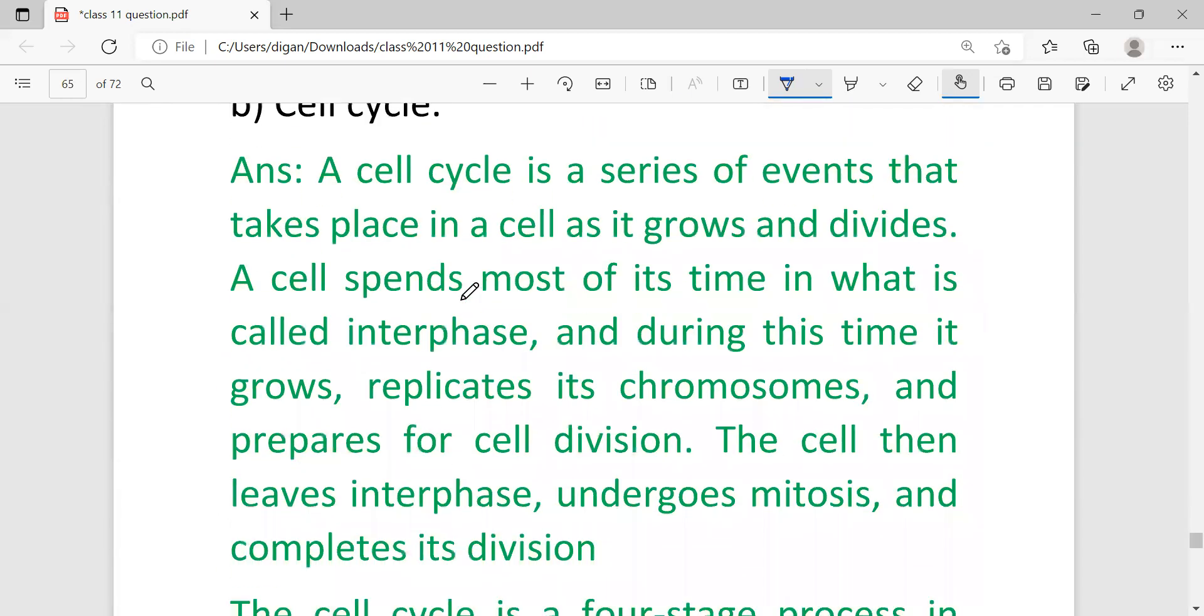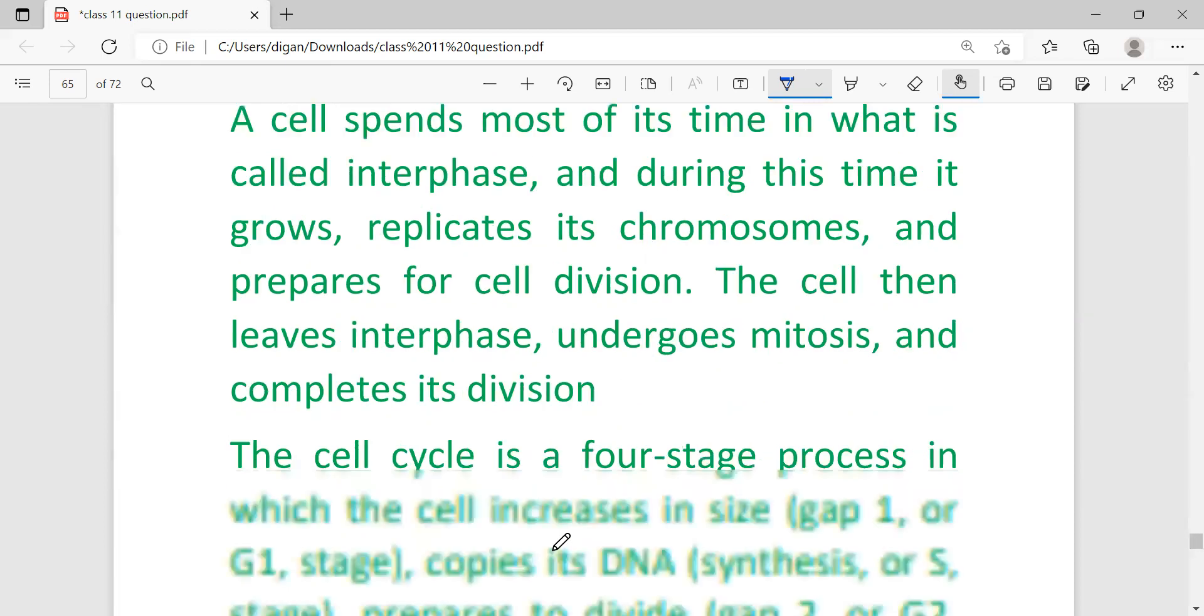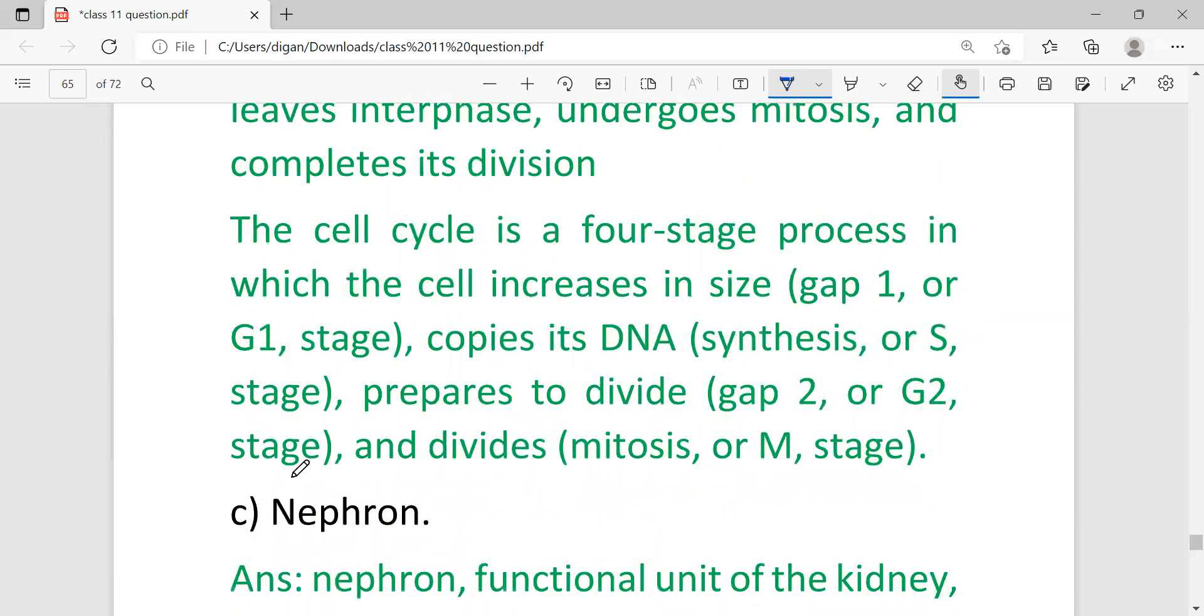Cell cycle. The cell cycle is a series of events that takes place in a cell as it grows and divides. A cell spends most of its time in what is called interphase, and during this time it grows, replicates its chromosomes, and prepares for cell division. The cell then leaves interphase and undergoes mitosis and completes its division. The cell cycle is a four-stage process in which the cell increases in size (Gap 1 or G1 stage), copies its DNA (synthesis or S phase), prepares to divide (Gap 2 or G2 stage), and finally divides (mitosis or M phase). G1 phase, S phase, and G2 phase come under interphase, and the last phase is called M phase.